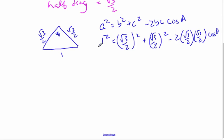And working through this, I get 1 is equal to 3/4 plus 3/4 minus, those cancel, and I get 3/2 cos θ.